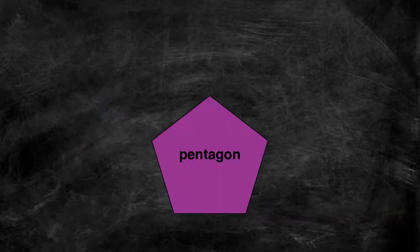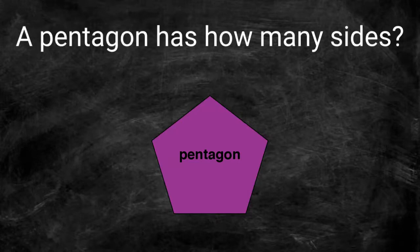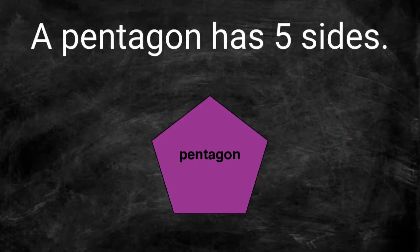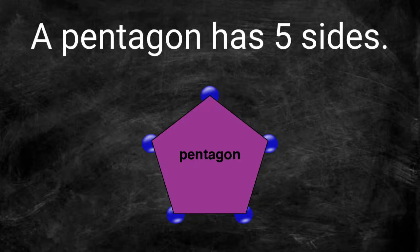A pentagon is another type of polygon. How many sides does this pentagon contain? Every pentagon has five sides. Pentagons also have five vertices.